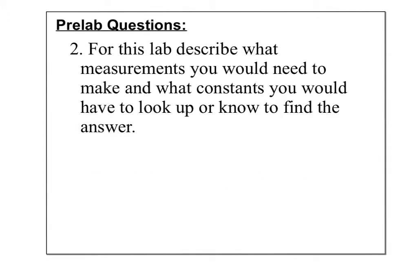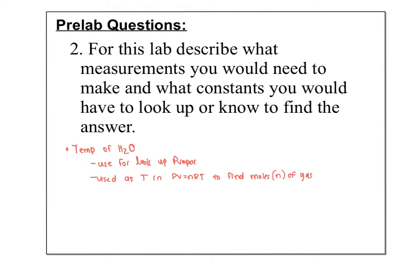Now let's think about what measurements we need for the data table, since the calculations will be very similar. First, we need to take the temperature of the water — we use it to look up the vapor pressure from the chart, and it also serves as the temperature in PV = nRT to find moles. We also need to measure the air pressure, which we'll look up from the weather, and we need to measure the volume of gas collected.